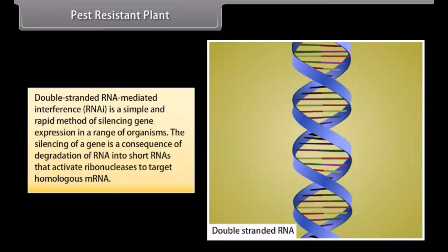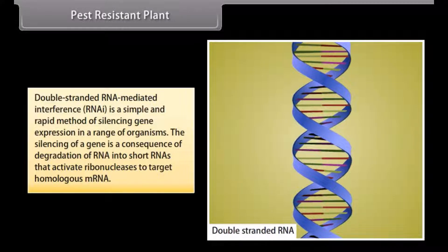Double-stranded RNA-mediated interference, RNAi, is a simple and rapid method of silencing gene expression in a range of organisms. The silencing of a gene is a consequence of degradation of RNA into short RNAs that activate ribonucleases to target homologous mRNA.